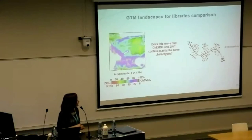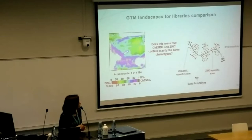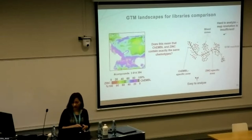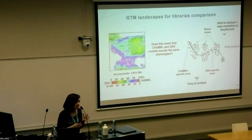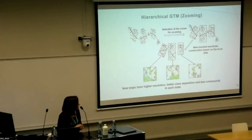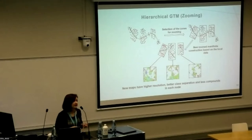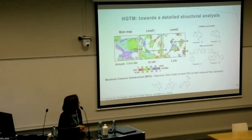In highly populated areas, many compounds collide and produce a green color, making analysis complicated. To handle this, you can select the highly populated problematic areas and build completely new maps on the compounds from those areas, giving better resolution and better class separation with fewer compounds per map. You can repeat this process several times until you have a reasonable number of compounds for structural analysis.